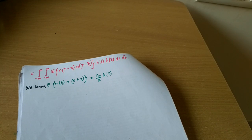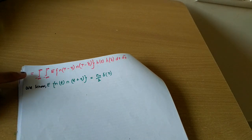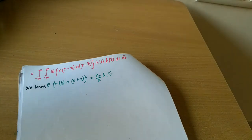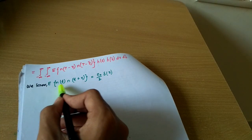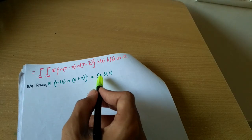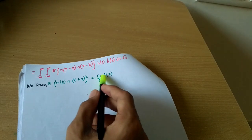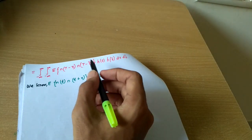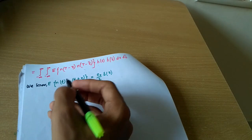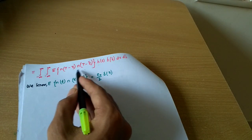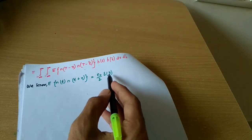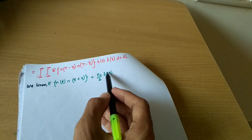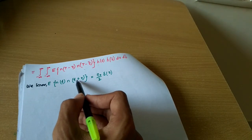In the last lecture, in the derivation of the matched filter, we completed up to a certain step where we took integration outside since it is a linear operator and took expectation inside. Now we will continue further. We know that the expectation of n(t) and n(t + τ) is nothing but N₀/2 · δ(τ), where N₀ is the power spectral density of the noise signal. Applying this property here, E[n(t)·n(t+τ)] = N₀/2 · δ(τ).